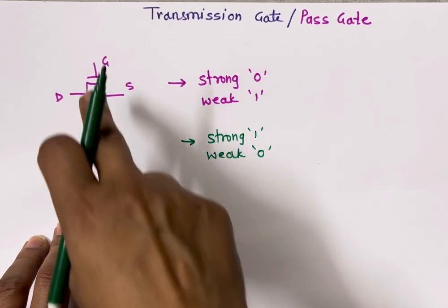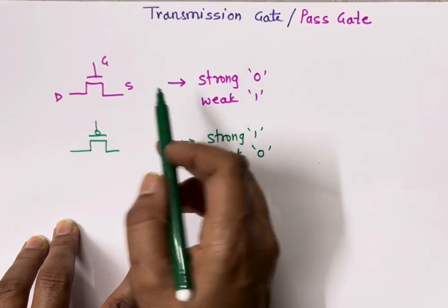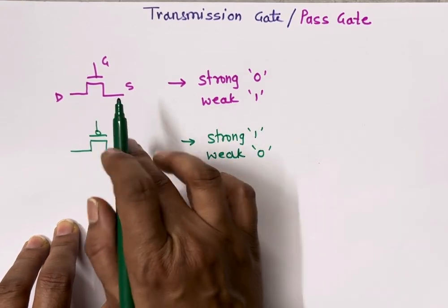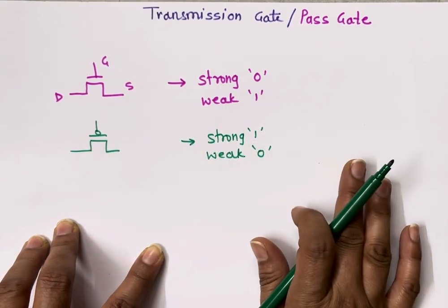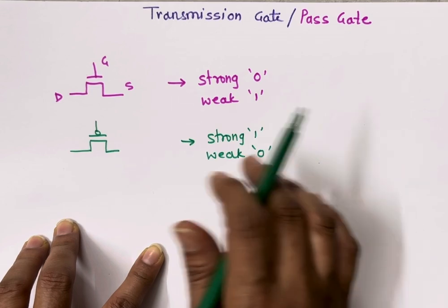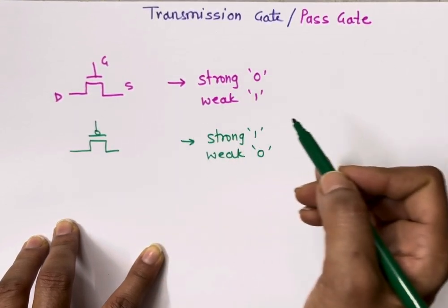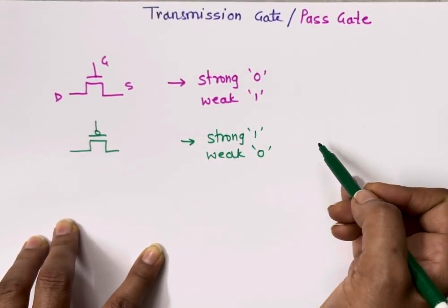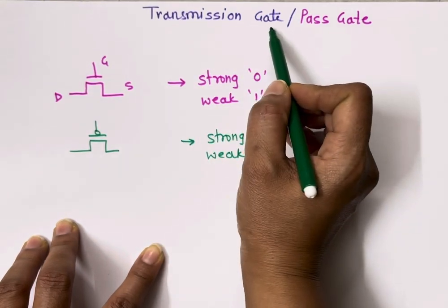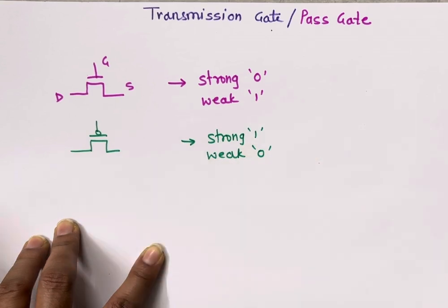Sometimes we call these transistors pass transistors, but both of them are not perfect switches — one passes strong zero, the other passes strong one. To get a perfect switch that can pass a strong zero as well as a strong one, we need a gate that handles both. This is where the transmission gate comes in. A transmission gate is nothing but a parallel combination of a P-channel MOSFET and an N-channel MOSFET.